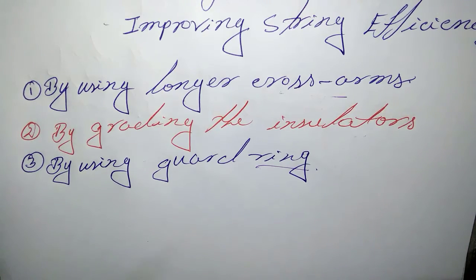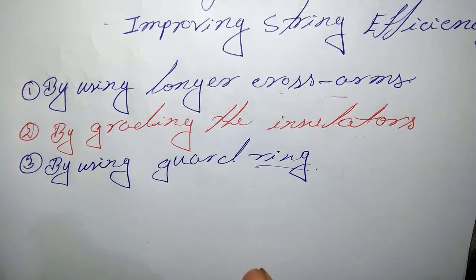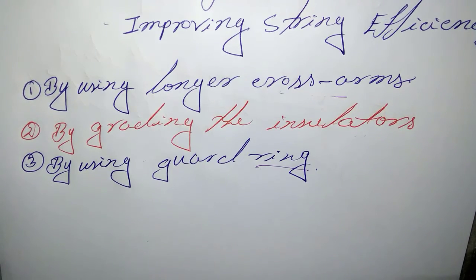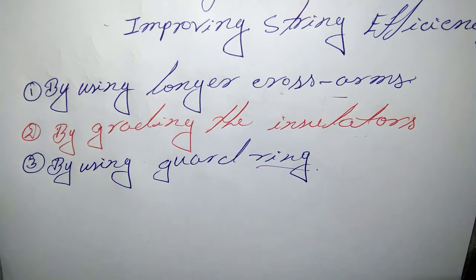The capacitance increases inversely proportional to the position. This method tends to equalize the potential distribution across the units in the string. Next method is by using guard rings.